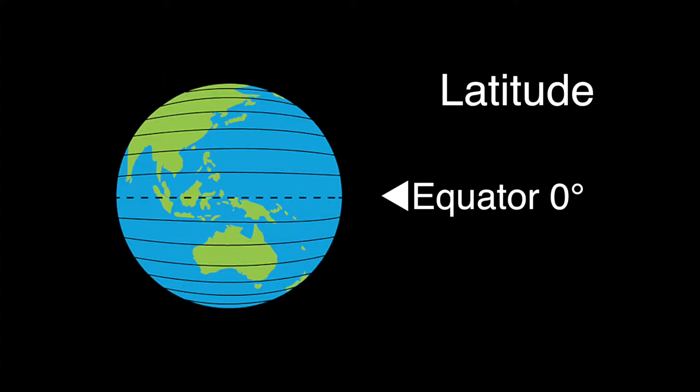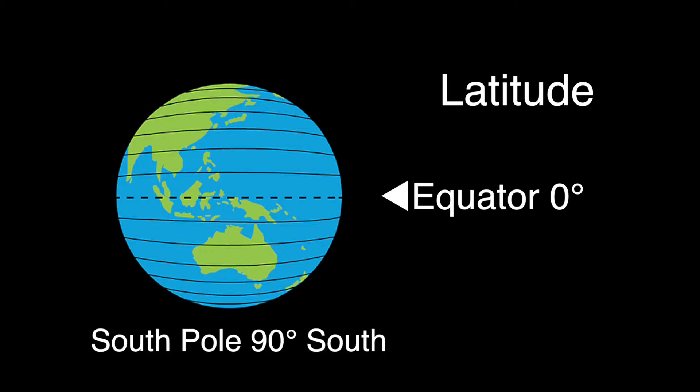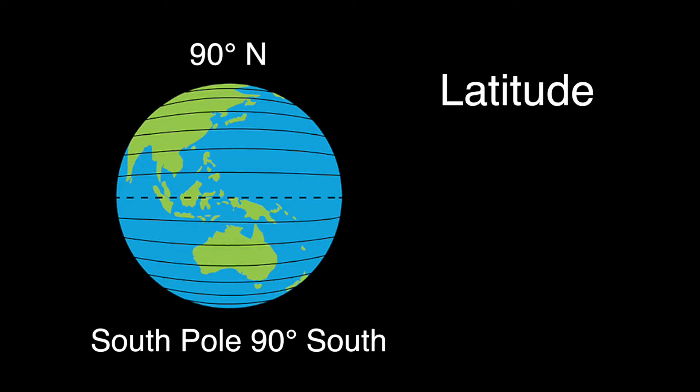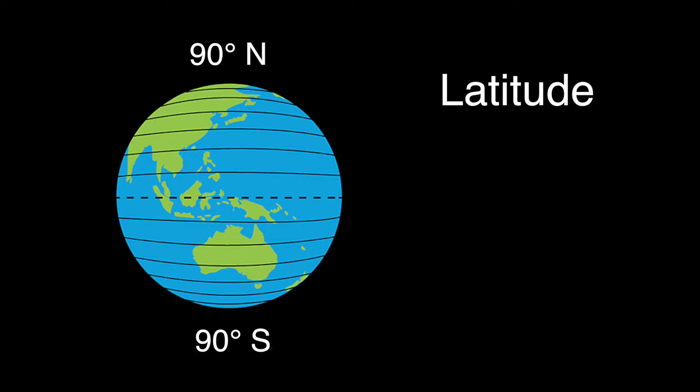The Equator is Latitude 0 degrees. The South Pole is Latitude 90 degrees south, and the North Pole is Latitude 90 degrees north. N for north, S for south.